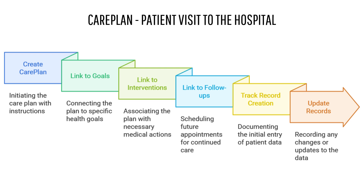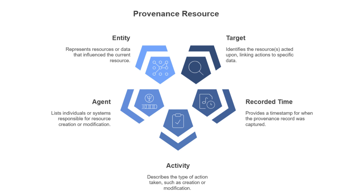FHIR brings a lot of structure and clarity to healthcare data, but what about data integrity — how do we make sure all this information is accurate and reliable? That's where the provenance resource really shines. It's like a digital detective that tracks every piece of data: who created it, when it was updated, and why it was changed — all meticulously documented to ensure accountability and the trustworthiness of your medical records.